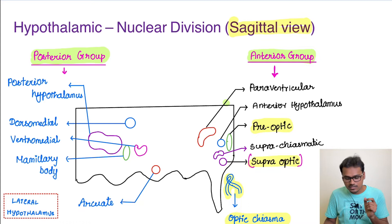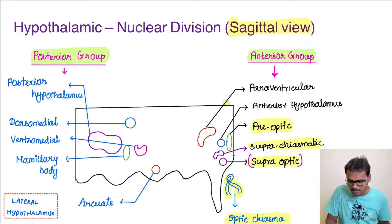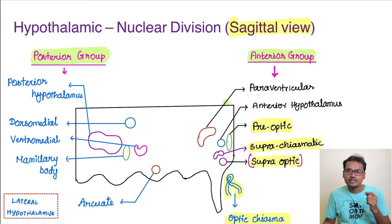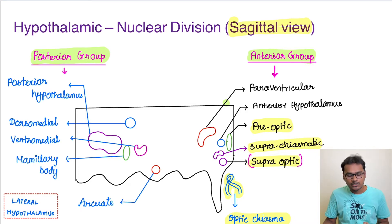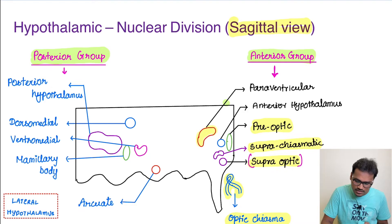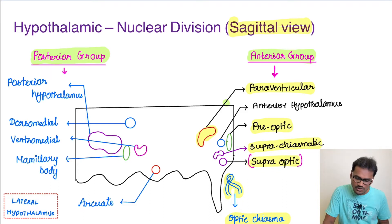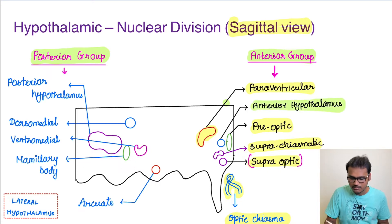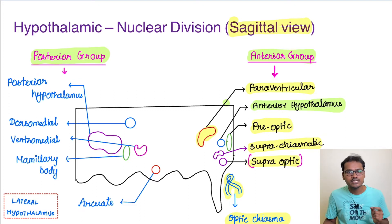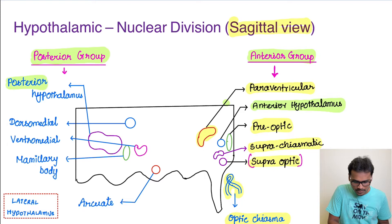Between the supra optic and pre-optic nuclei lies the supra chiasmatic nucleus. Additionally, the anterior group contains the para ventricular nuclei — which is bigger in size — and the anterior hypothalamic nucleus itself. Similarly, on the posterior side, there is the posterior hypothalamic nucleus.